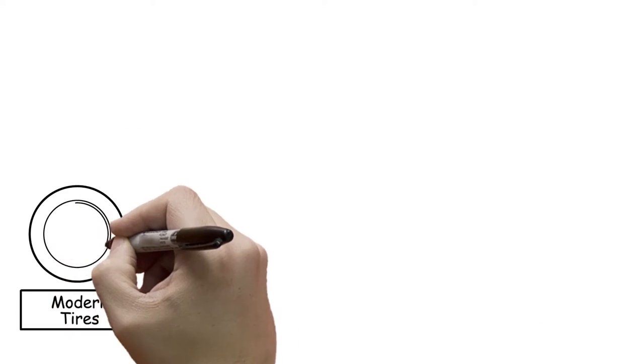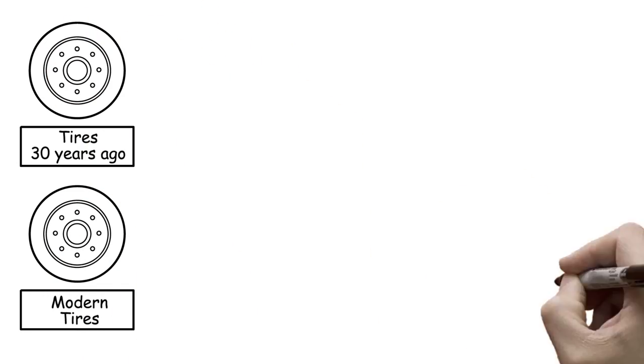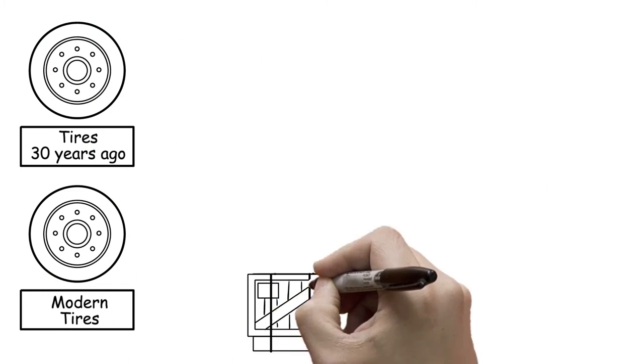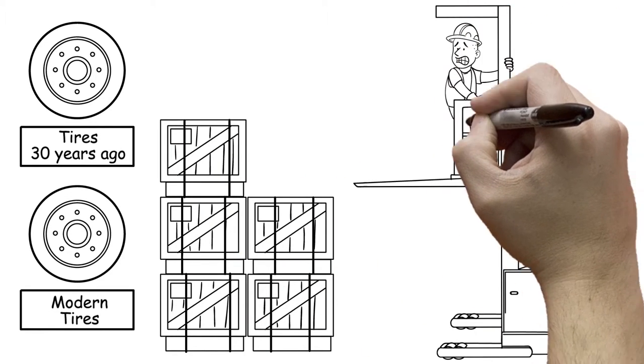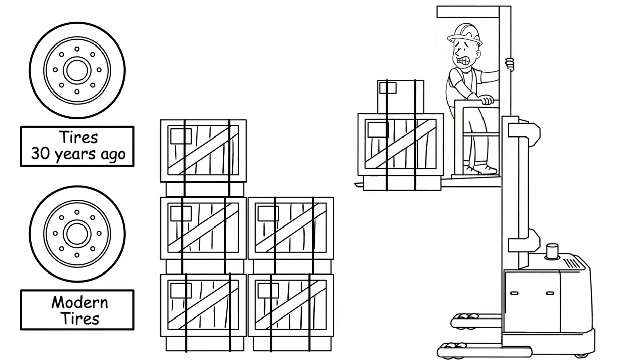But strangely, forklift tire design hasn't changed in 30 years. So all those efficiencies you gain in your truck are promptly lost thanks to tires that were made for another era and can't hold up under the strain.